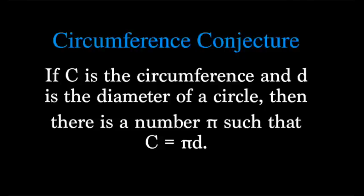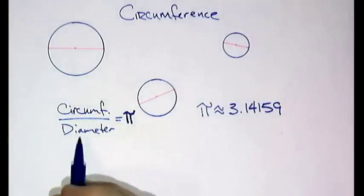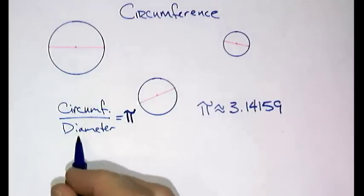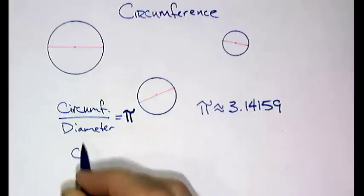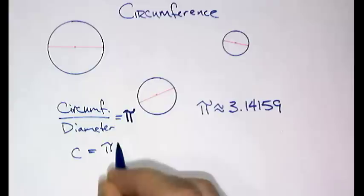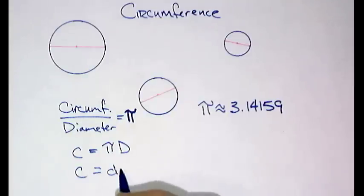For our circumference conjecture, we're going to say if C is the circumference and D is the diameter of a circle, then there is a number pi such that the circumference is equal to pi times D. Now, how did I get that? Well, what I did is circumference divided by diameter is pi. And of course, if I multiply both sides by diameter, that would be equal to πD.